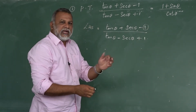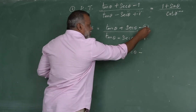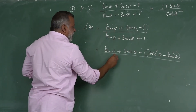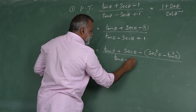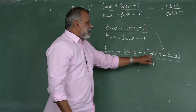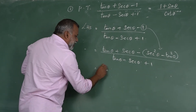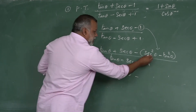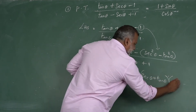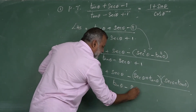In the numerator, tan θ + sec θ, this '1' is replaced by sec²θ - tan²θ. Now it is in the form of a² - b², so we can apply the factorization: it can be simplified as (sec θ + tan θ)(sec θ - tan θ). The denominator remains tan θ - sec θ + 1.